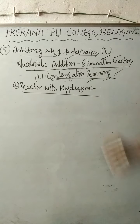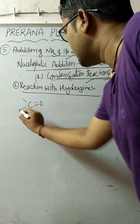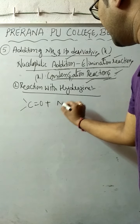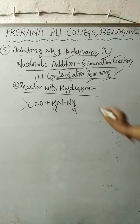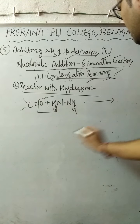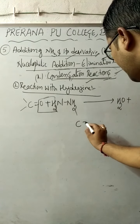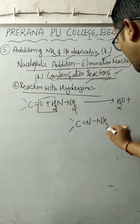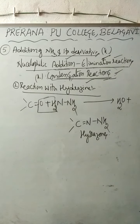The next reaction is with hydrazine. When an aldehyde or a ketone is made to react with hydrazine — whose formula is NH2-NH2 — a water molecule gets eliminated. The product obtained is called a hydrazone. So hydrazine readily gives hydrazones as the major product.